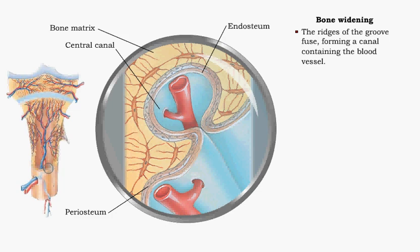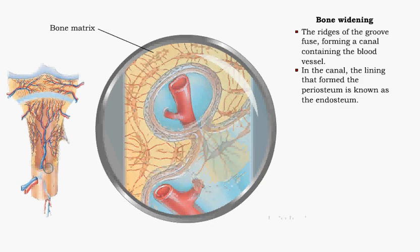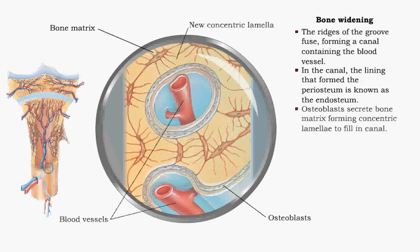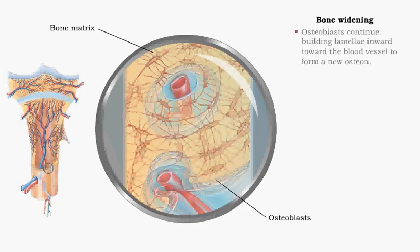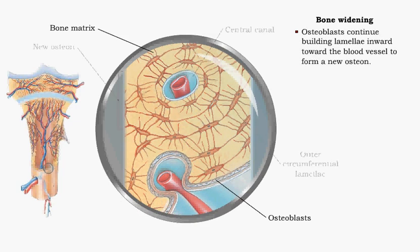Notice that it is surrounded by the endosteum, which contains osteogenic cells. Osteoblasts continue to secrete matrix, forming lamellae. Osteogenic cells in the endosteum continue the process, building new lamellae towards the blood vessel in the center. A new osteon forms.